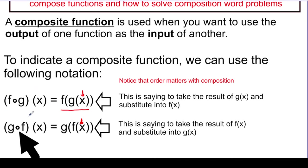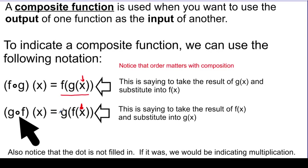There's also this notation using a dot. This little dot in the middle kind of looks like our multiplication symbol, but the dot is not filled in. If it was filled in, that's multiplication. If it's an open circle between f and g, f composed with g means take the answer to g and plug it into f. These two expressions mean the same thing — they're just different notation, and they're interchangeable.